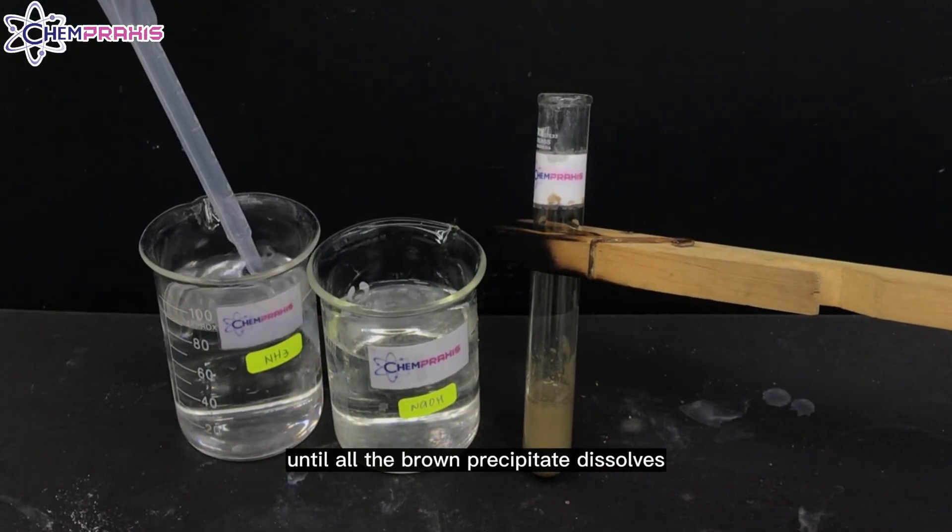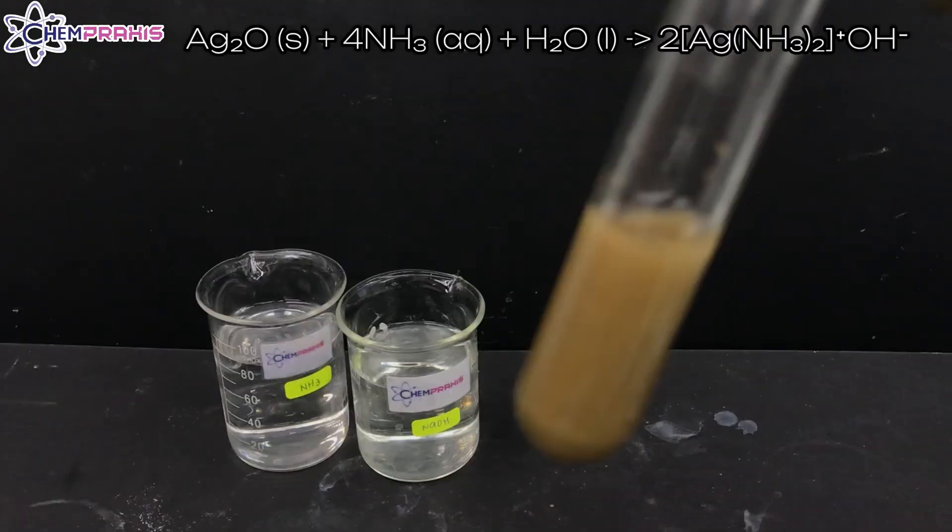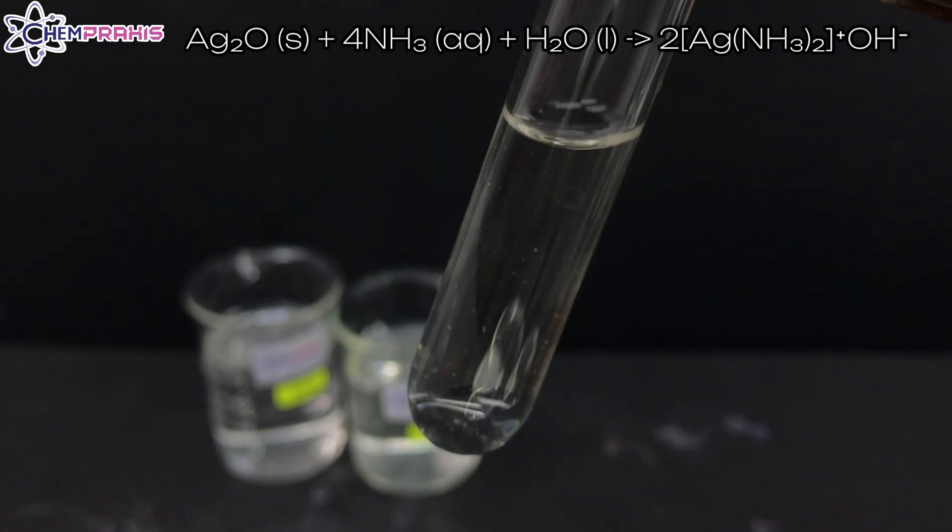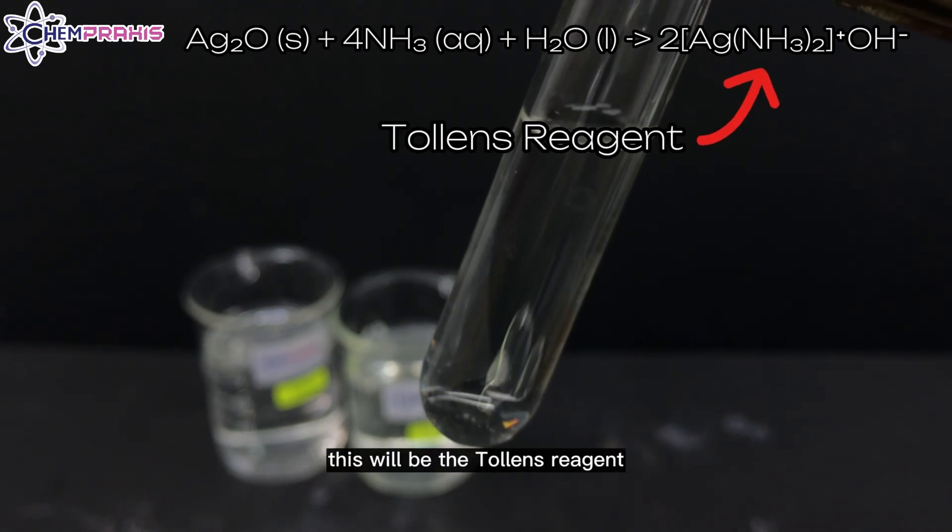Now, we'll add ammonia solution until all the brown precipitate dissolves. After all the brown precipitate has dissolved, this will be your Tollens reagent.